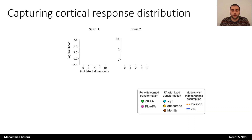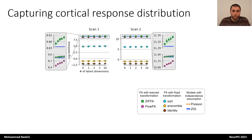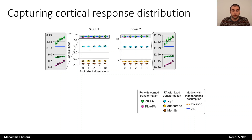Latent dimension of zero implies that the model assumes independence among neurons. In terms of log-likelihood, the ZFA model outperforms all other models in capturing the response distribution for all numbers of latent dimensions. Importantly, higher latent dimensions result in a higher performing model, which emphasizes the importance of accounting for dependencies among neurons for more accurate models.